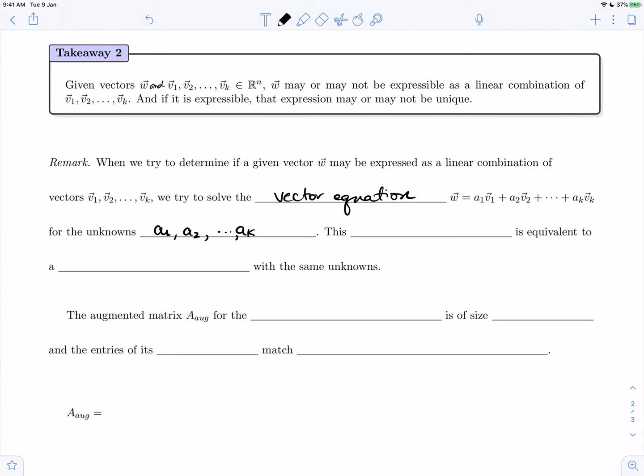The unknowns in this vector equation are the coefficients a1, a2, all the way up to ak. This vector equation is equivalent to a linear system with the exact same unknowns, which we use to solve. The augmented matrix A_aug for the linear system is of size n by k plus 1.